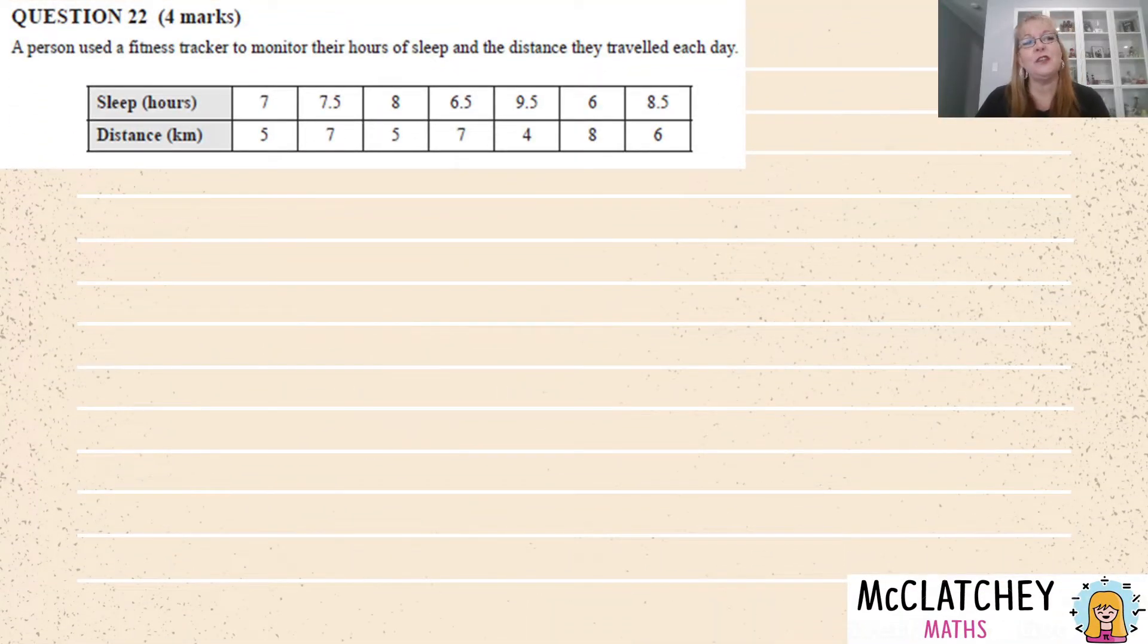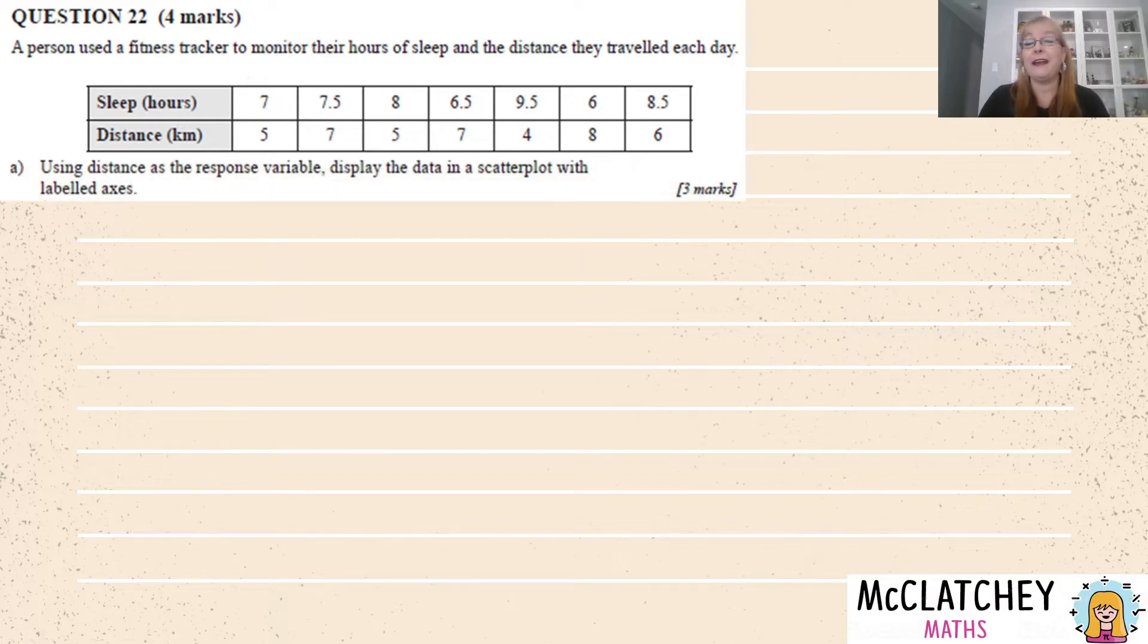A person used a fitness tracker to monitor the hours of sleep and the distance they travel each day and we can see this in here. Part A tells us that they want us to have distance as the response variable and that's how they want us to display the data.